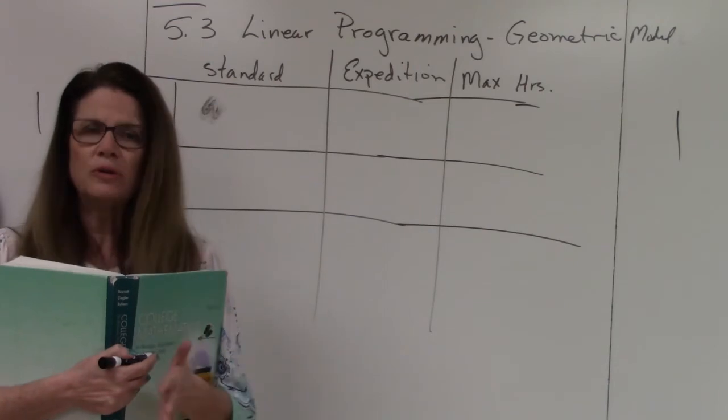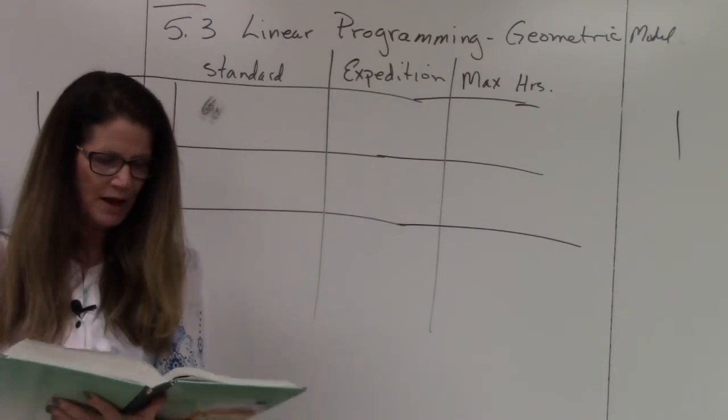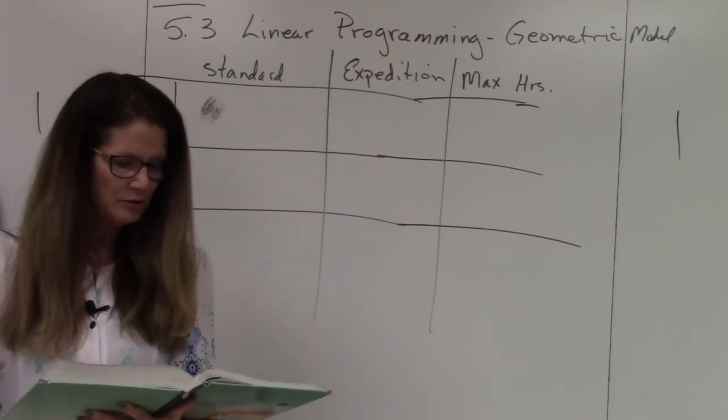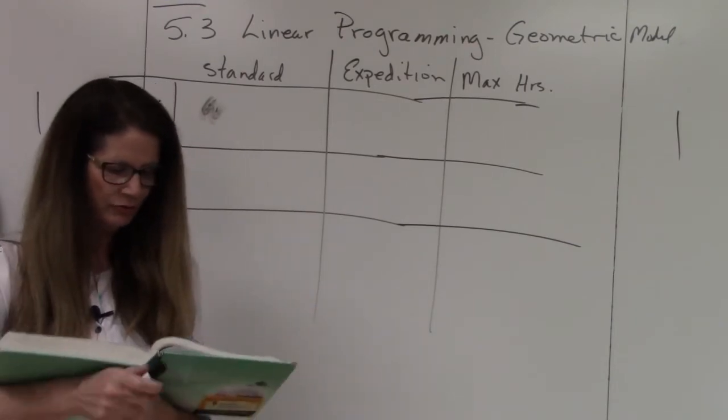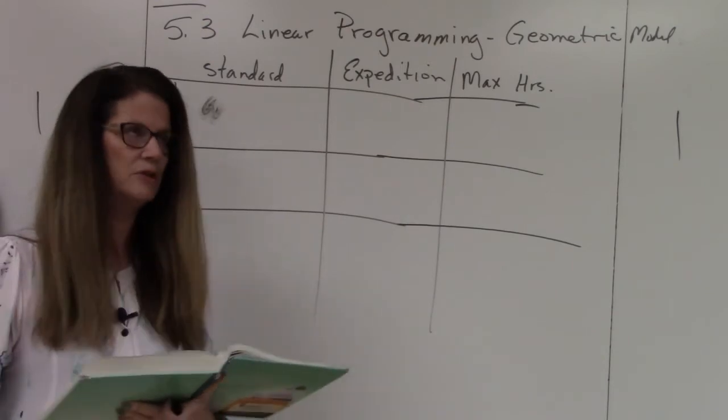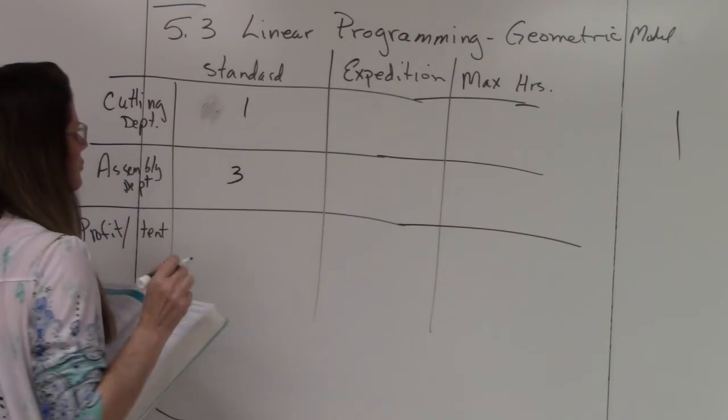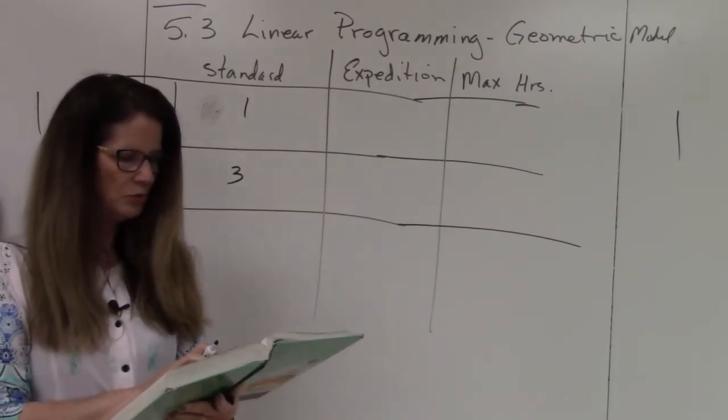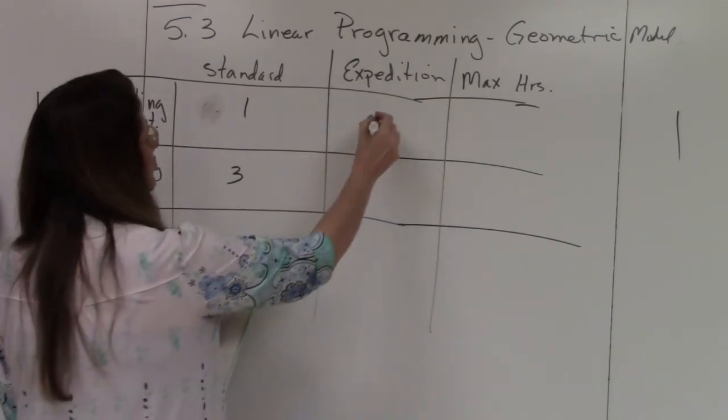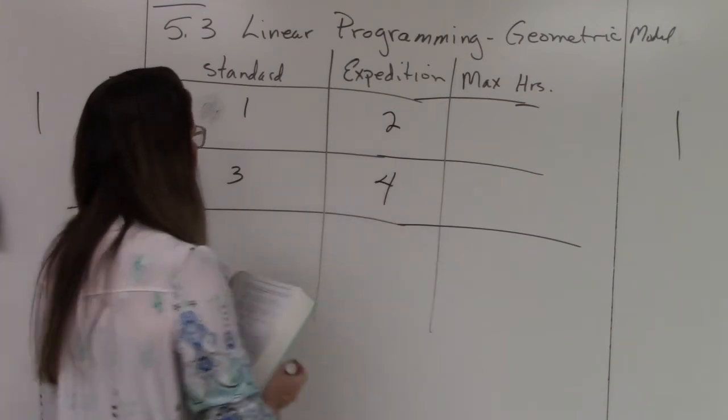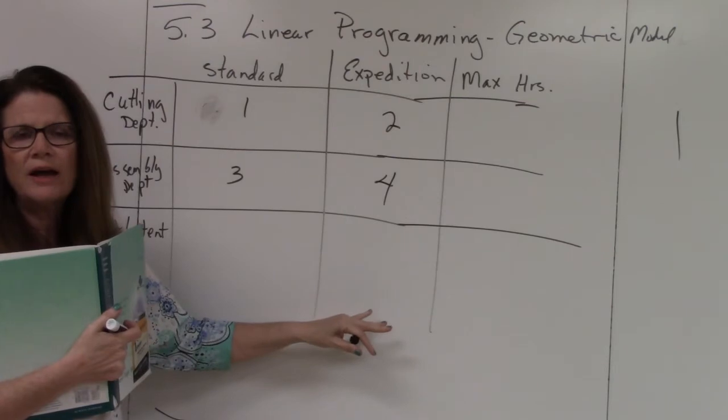The other aspect you'll have to remember is how to find the corner points, because maximum and minimum only happens at the corner points of the feasible region. So here's the problem: we have standard model and expedition model.